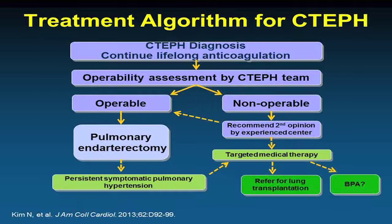Every patient with CTEPH needs referral for surgical evaluation. Once diagnosed, lifelong anticoagulation is required. An operability assessment by a CTEPH team is essential because surgery can be curative. If deemed non-operable, targeted medical therapies are used. If those fail, lung transplantation is considered. Balloon pulmonary angioplasty is an emerging option with growing experience. The bottom line is that every patient deserves an operability assessment.